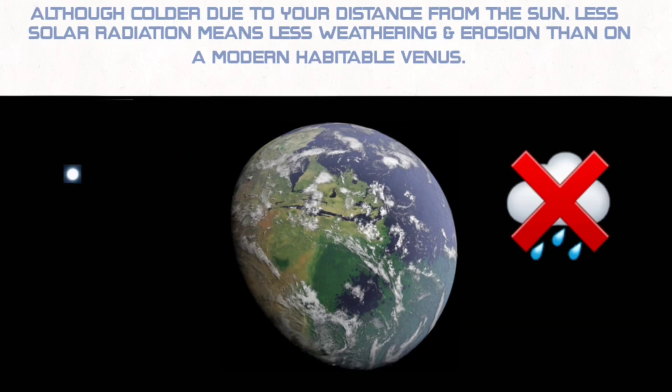Although colder, due to your distance from the sun, less solar radiation means less weathering and erosion than on a modern habitable Venus.